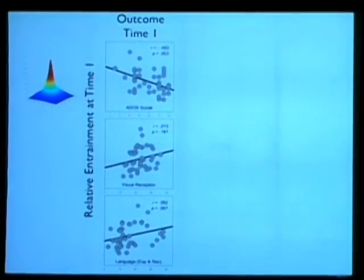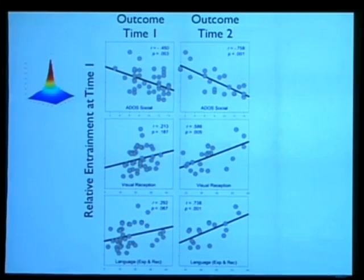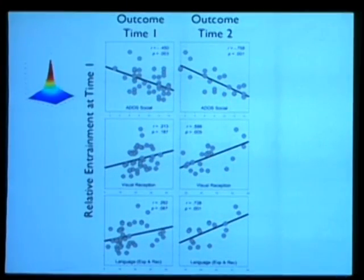So, we use this measure of relative entrainment, and this is what we found. This is time one. Experiment and outcome measures at the age of two. It was predictive of how autistic they were, and it's kind of trending in predicting their nonverbal skills or intelligence and language. But this was the exciting part. Now, these outcome measures are now when they are three and a half. It's a year and a half later after the experiment that we did at the age of two. And now, we are predicting very well how autistic they are. We are also predicting their cognitive development, and we are also predicting their language development.